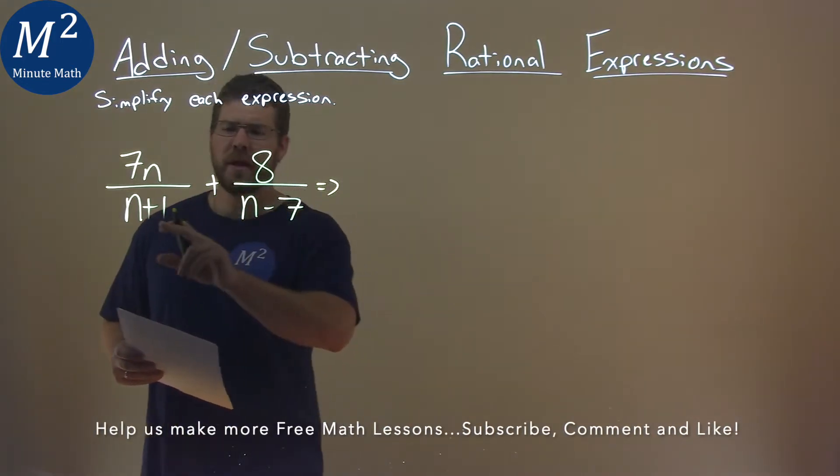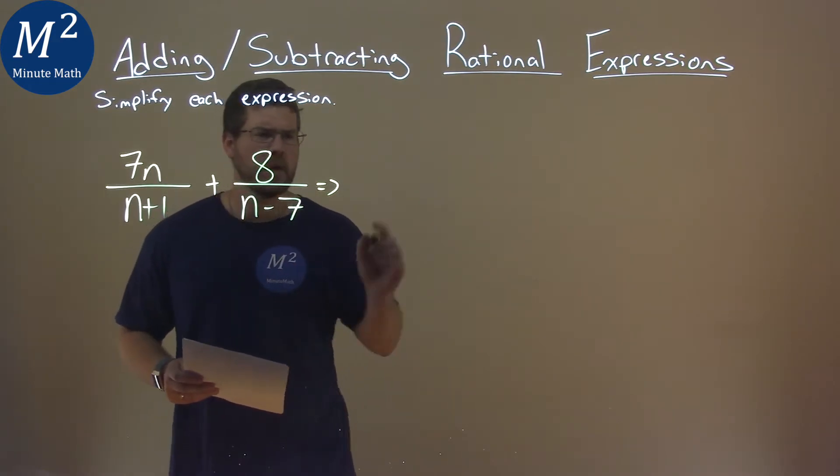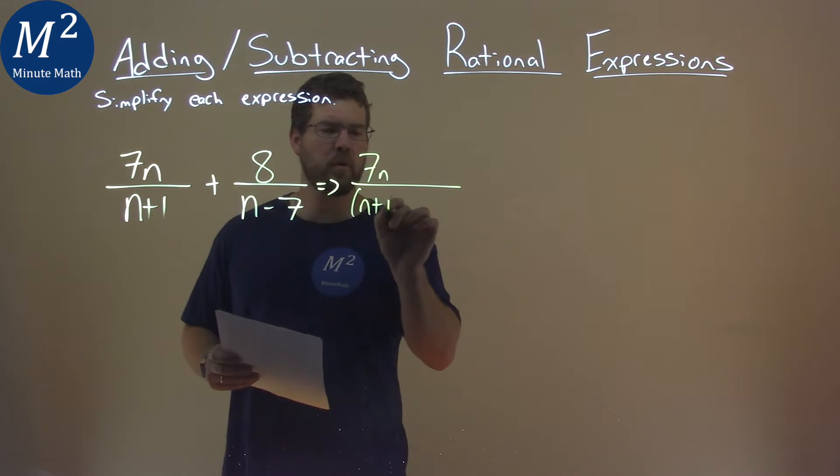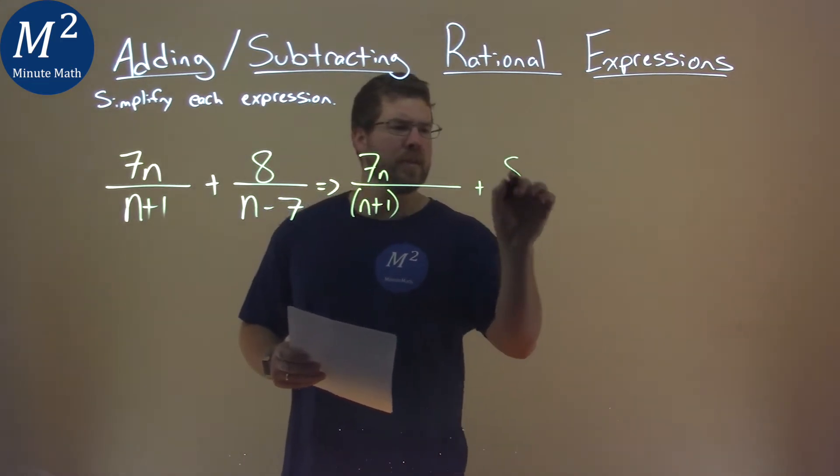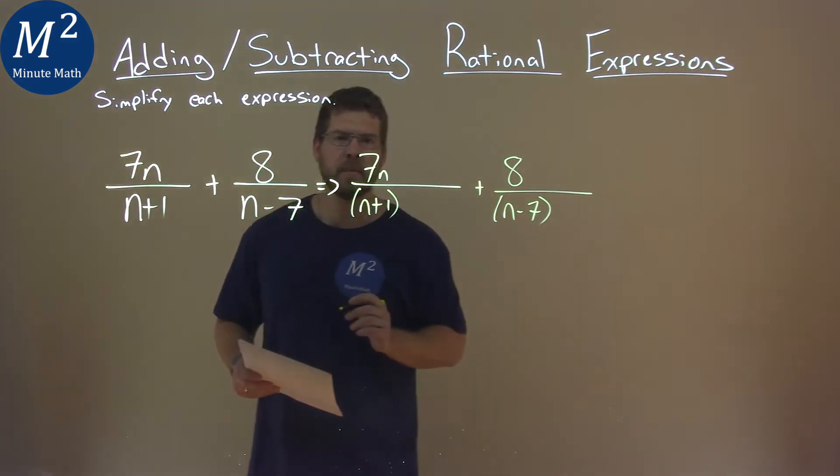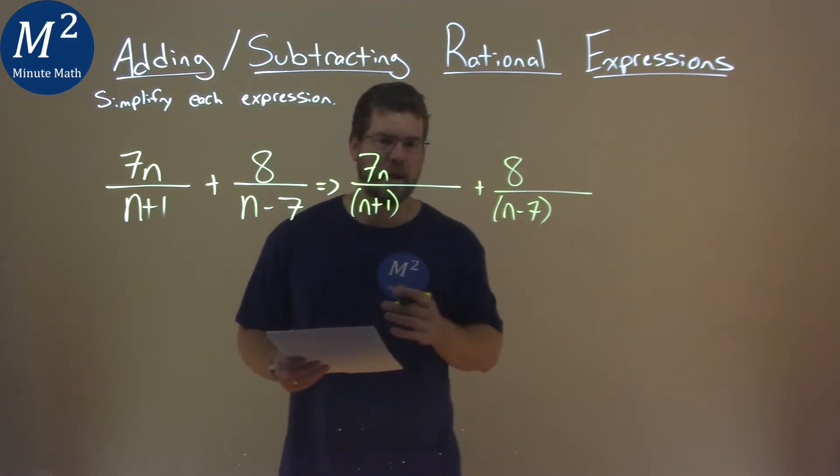One thing we notice is that we don't have the same denominator here for the left and the right fraction. So I'm going to rewrite this, 7n over n plus 1, and we have plus 8 over n minus 7. And we need to have the same denominator so we can combine these fractions.